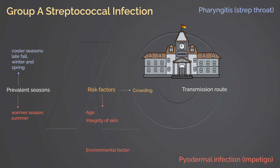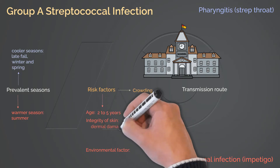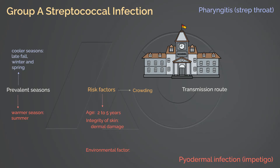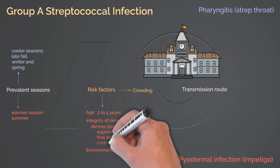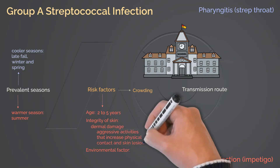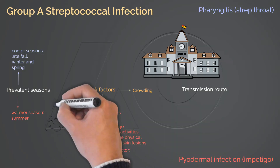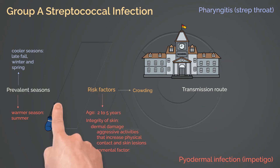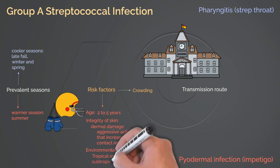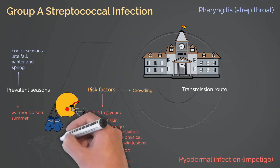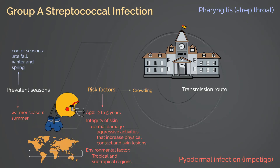Streptococcal pyodermal infection commonly affects children aged 2 to 5 years. Dermal damage increases risk for Streptococcal impetigo. Therefore, activities that may lead to skin lesions — such as wrestling and football — put the client at higher risk compared to other activities. Tropical and subtropical regions are an environmental risk factor for Streptococcal impetigo.